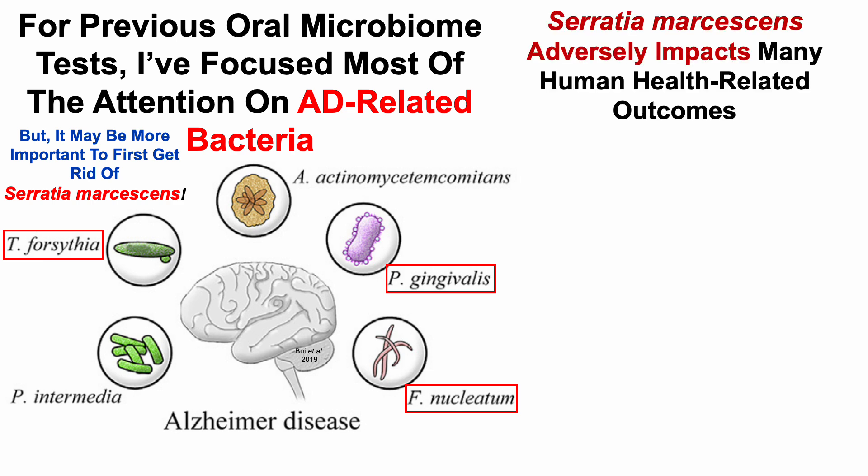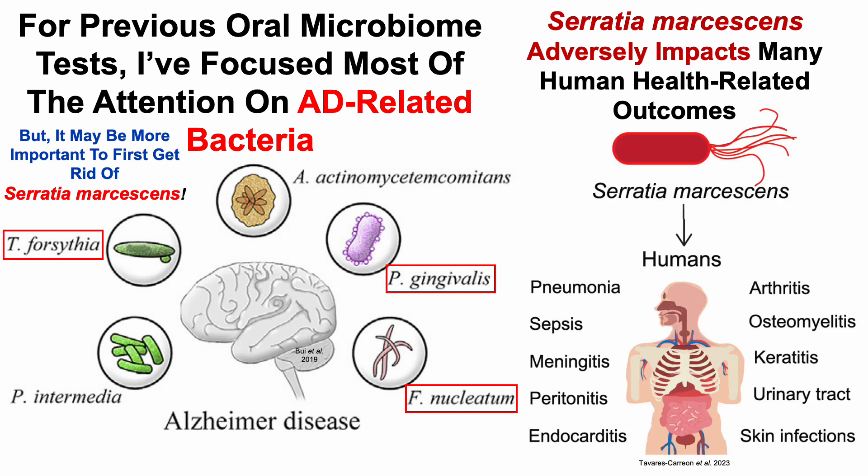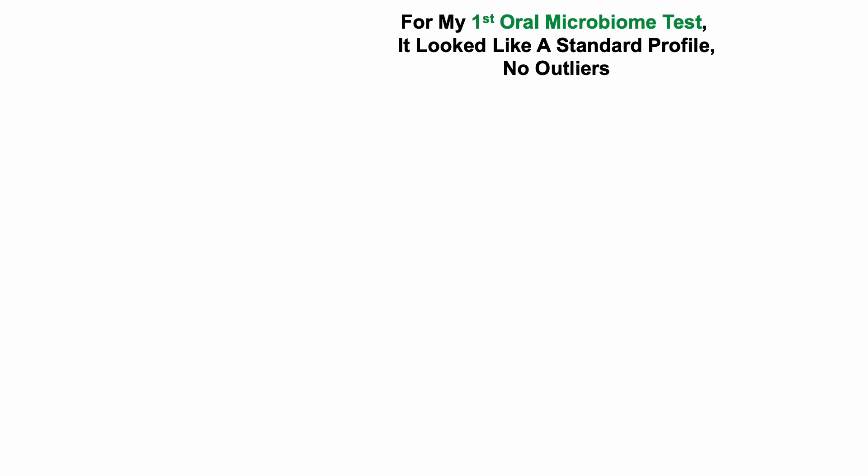Serratia adversely impacts many human health-related outcomes, and that's what we can see here. Just to illustrate a few, it impacts pneumonia, sepsis, meningitis, and there's a pretty long list. So with that in mind, why wasn't this bacterium mentioned in earlier videos? That's because for my first oral microbiome test, it looked like a standard profile with no major outliers.